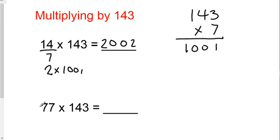1,001. Let's do another example. Divide this by 7, I get 11, and 11 times 1,001 is 11,011. There you have it—the 143 multiplication trick. Just remember, divide by 7.